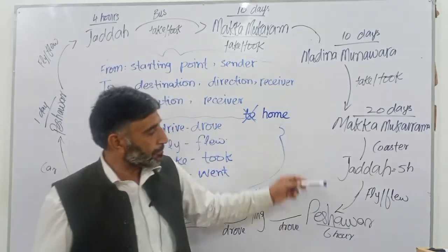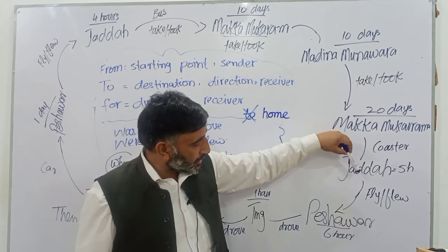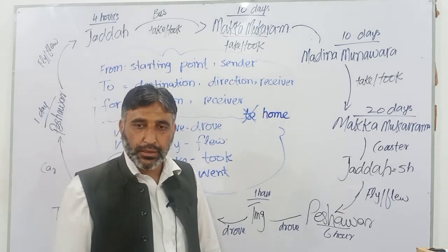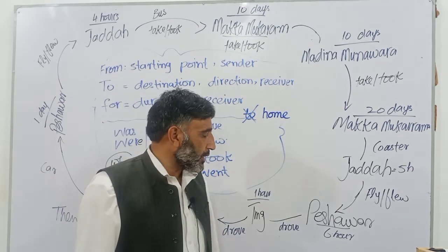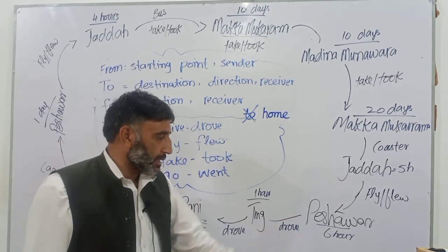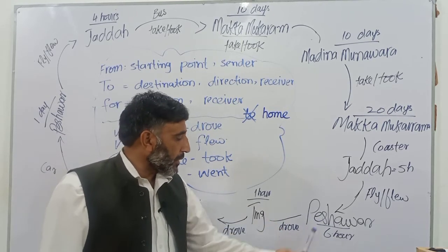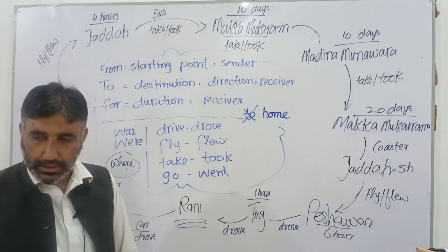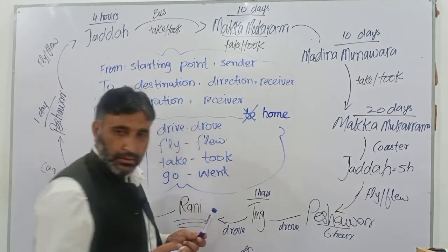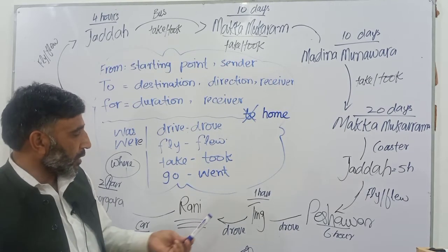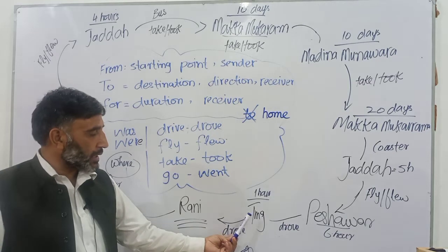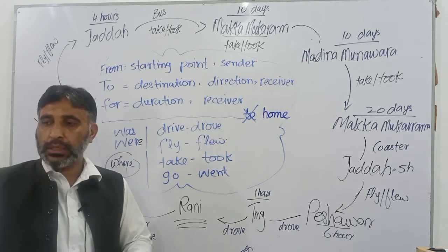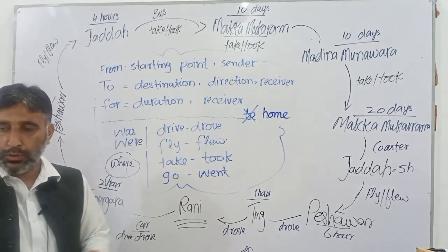Then they flew from Jeddah to Peshawar, and they were in Peshawar for six hours. Then they drove from Peshawar to Temargara, and they were in Temargara for one hour. Then they drove from Temargara to Rani. They are in Rani now — they performed their Hajj and their permanent residence is there.